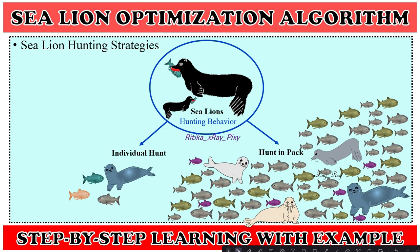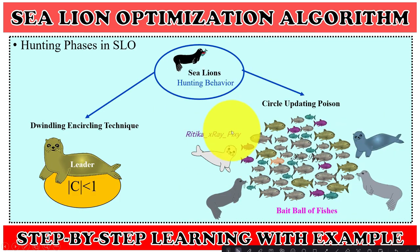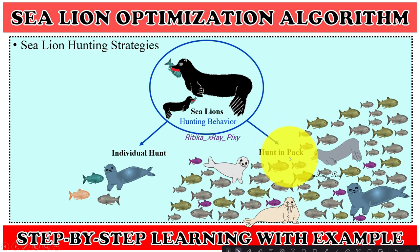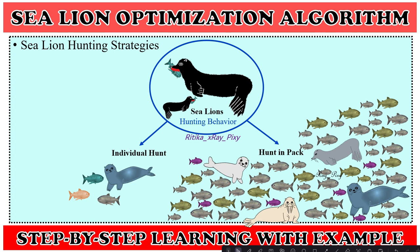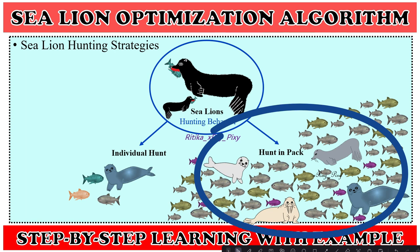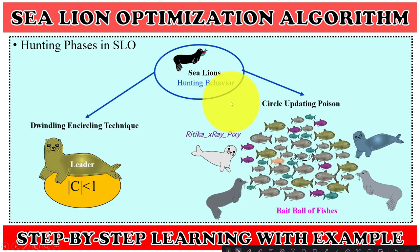Now we will understand the hunting behavior and hunting strategies used in this algorithm. There are two types of hunting behavior: individual hunt and hunt in pack (group hunting). Sea lions hunt individually when there is limited food, and they hunt in a group when there is plenty of food. When hunting in a group, their chance of catching more prey increases, so most often they hunt in groups.